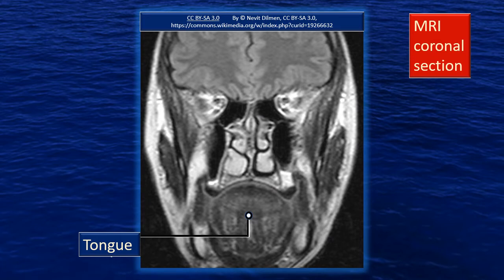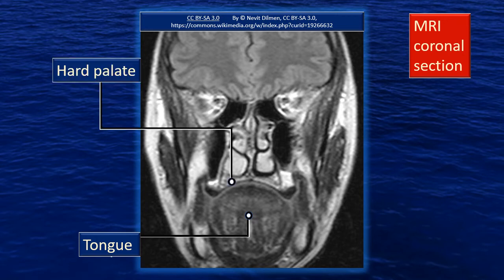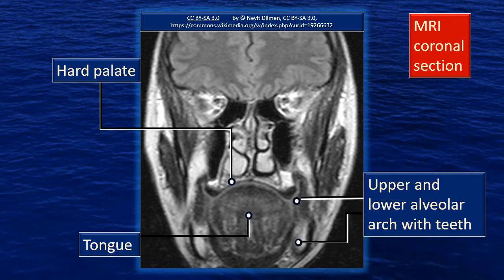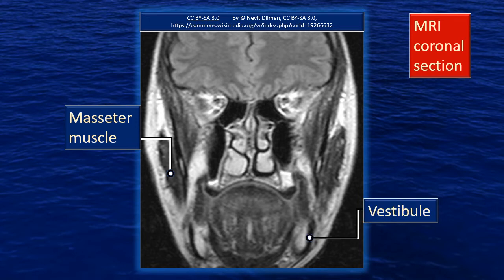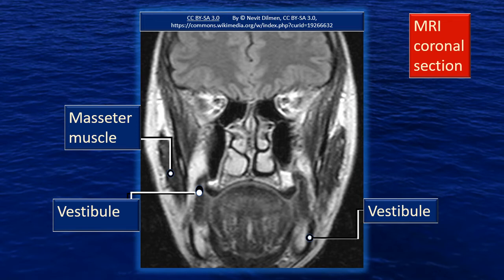Let's take a coronal MRI section through the mouth cavity. Very obvious is the large tongue in the central region. The hard palate — you can see the arch and the bony hard palate above it. Next, upper and lower alveolar arch with teeth, note the white color. That's the masseter muscle — a large muscle, indicating the section is fairly posterior. That is the cavity outer to the teeth — that is the vestibule. Similarly, the vestibule corresponding to the region inner to the upper cheek is also shown here.